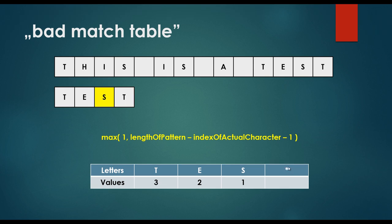The star entry represents any other character not present in the pattern, and it gets the value equal to the length of the pattern — so basically 4. When running the Boyer-Moore algorithm and a shift is needed, we look up the character in the badmatch table: if it's S, shift 1 to the right; if it's E, shift 2; if it's T, shift 1; and for any other character, shift 4. Unlike brute force search, we are able to take several steps at the same time.